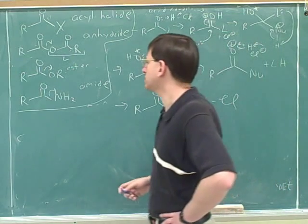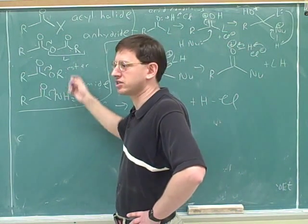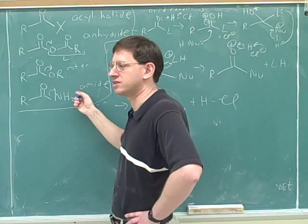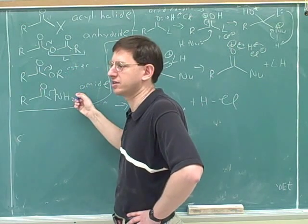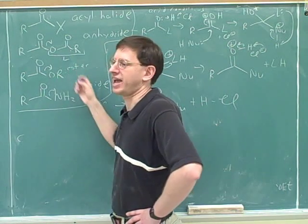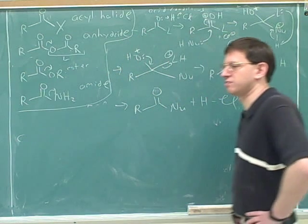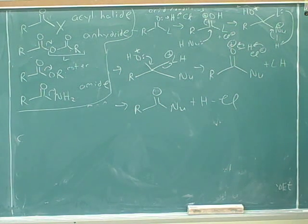So remember that we would use these types of protonations for reactions down here on the bottom part of the chart. We would use this acid catalysis for reactions down here at the bottom when things are not as reactive. So we need to make things into better leaving groups and make the whole molecule more electrophilic to get things to work better here. So this would be an example of our acid-catalyzed reaction over here.